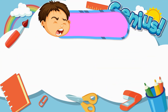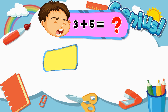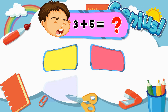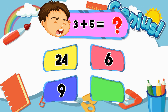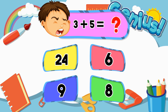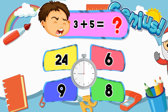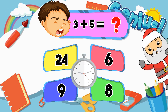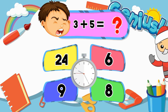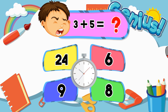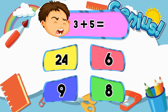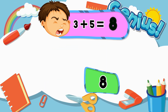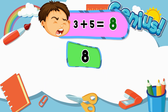What is 3 plus 5? 5, 24, 8, 6, 9, 8. 8. 1.